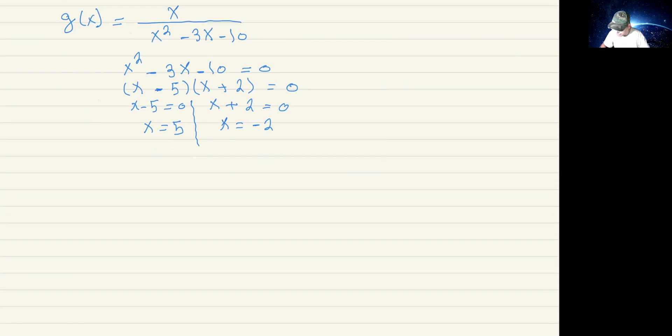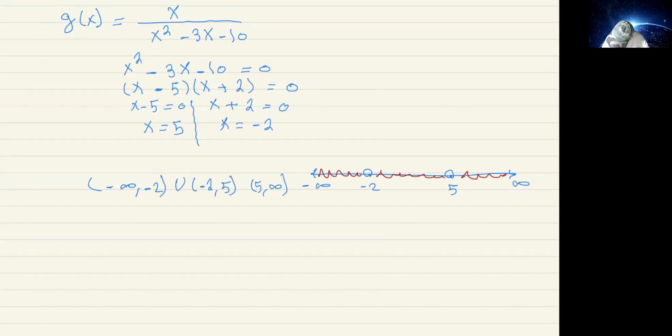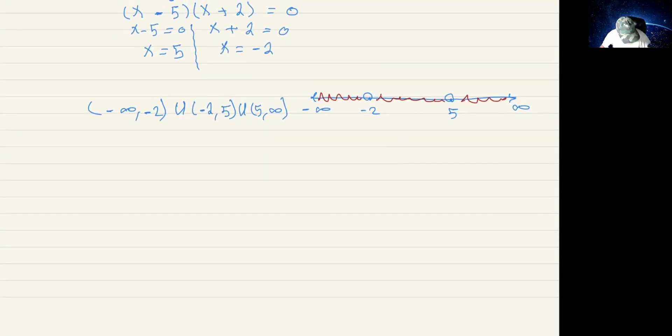And subtract 2 here, so I got x is negative 2. So how many restricted values do I have here? Two restricted values. So I also draw the number line, negative infinity to infinity, and I assign these two points, negative 2, open circle, 5, open circle, and then shade the area. So you see here that I have three intervals. So let's start from negative infinity to negative 2, and I have from negative 2 to 5, and then from 5 to infinity, union and union. I hope this is clear so far.